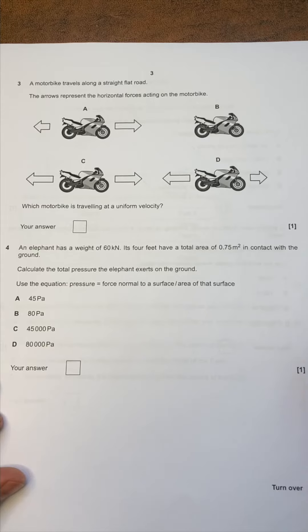Question 3. A motorbike travels along a straight flat road. The arrows represent the horizontal forces acting on the motorbike. Here we go.